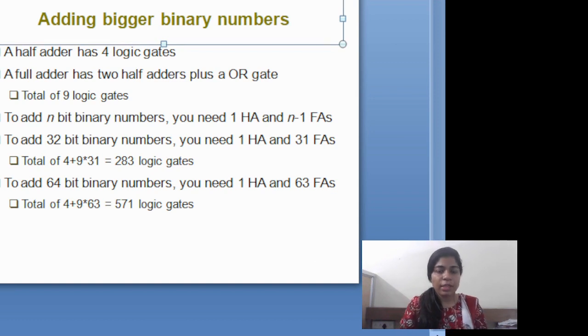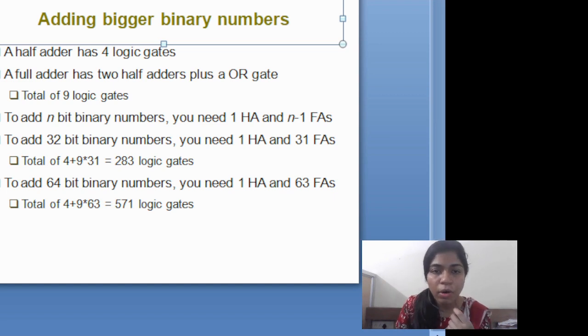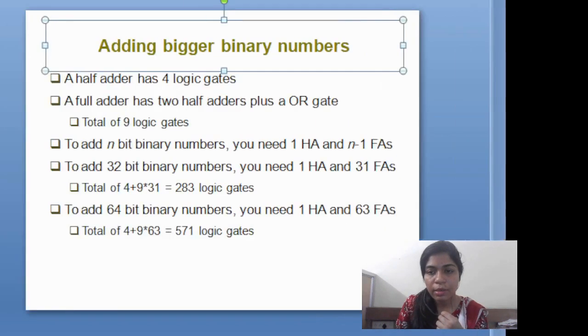A half adder has four logic circuits, and a full adder has two half adder circuits. And for an n-bit binary number, there will be one half adder and n-minus-one full adders.